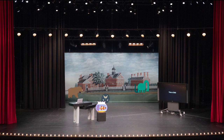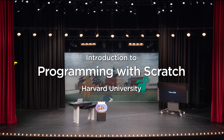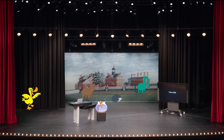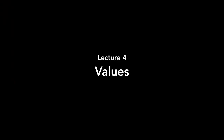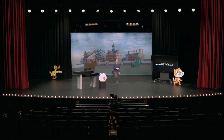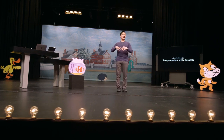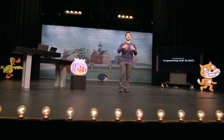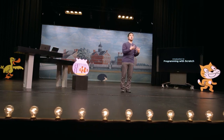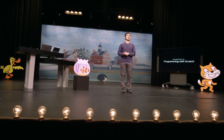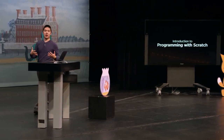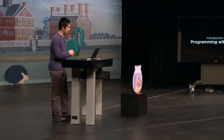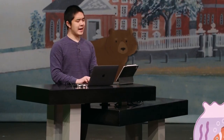Welcome back, everyone, to an introduction to programming with Scratch. Last time, we took a look at events — things that can happen, like pressing the green flag, clicking a button, or pressing a key on the keyboard, and letting our Scratch project respond to those events. They respond with functions, those blocks we stacked on top of each other to let our sprites or the stage respond in some way. Let's take a closer look today at those functions.